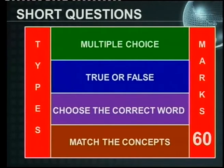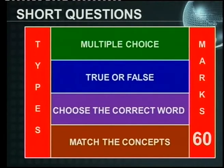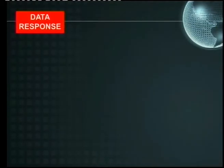All these questions — the answers are on the question paper. Multiple choice, they give you four answers and you choose one. True or false, you choose between the two. Choose the correct words — they give you the words. Match the concepts — they give you the concepts and definitions. So you can get 60 out of 60. This is a very important part of your question paper, your short questions.